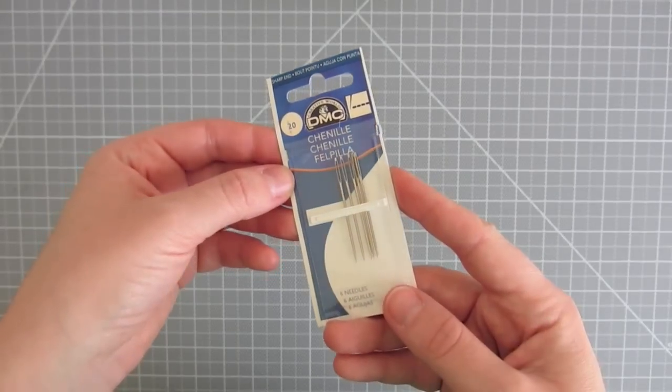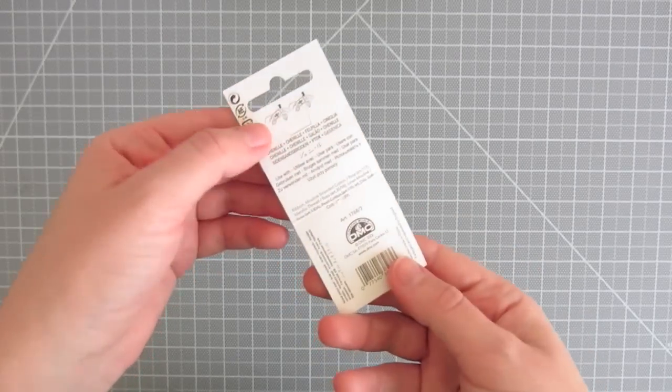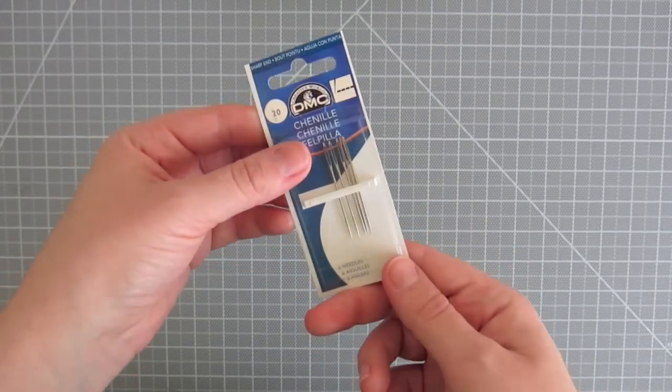The second needle is also for thick thread, but it's straight. The one I use is a size 20 chanel needle.